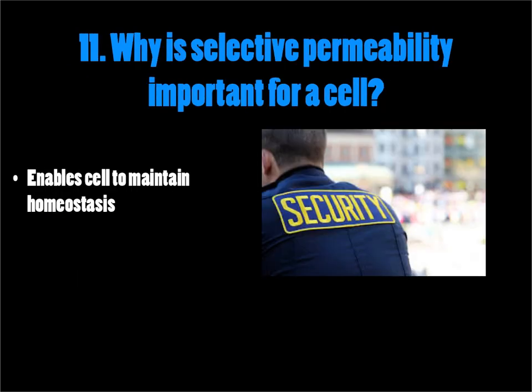Why is selective permeability important for a cell? The main thing is it enables the cell to maintain homeostasis — that steady internal state it requires. The cell wants to keep substances within itself relatively balanced. If it's using stuff up, it needs those materials replaced. If it's producing waste, it wants to get rid of those waste products, shipping them out while nutrients necessary for the cell get moved in.